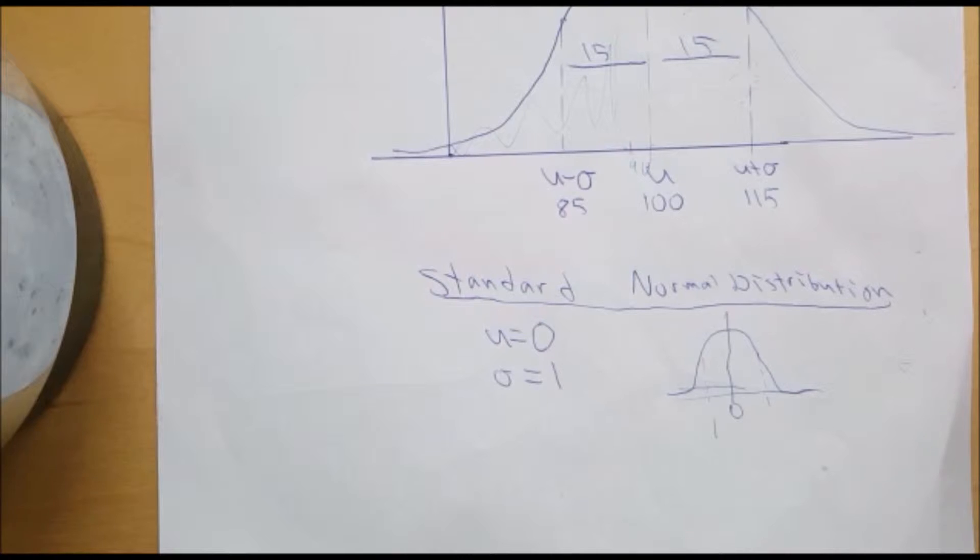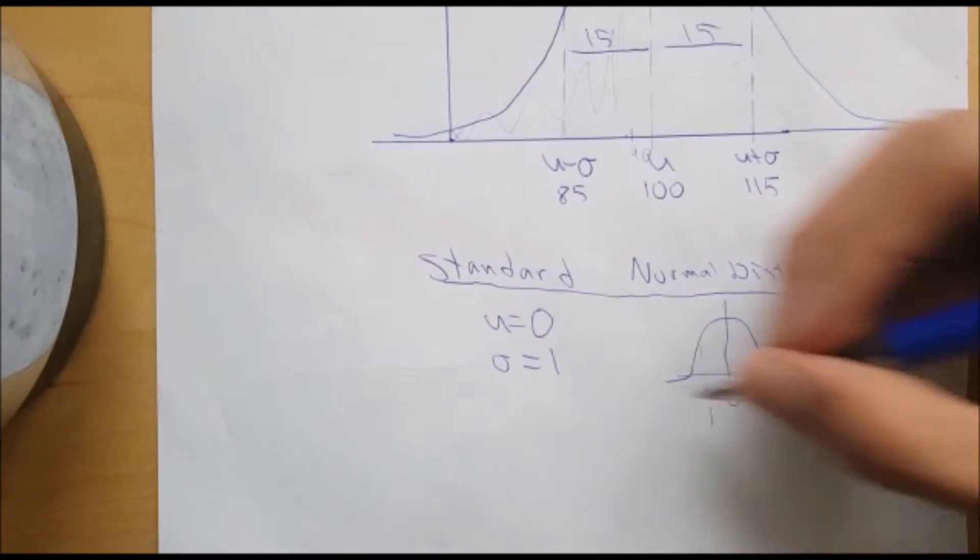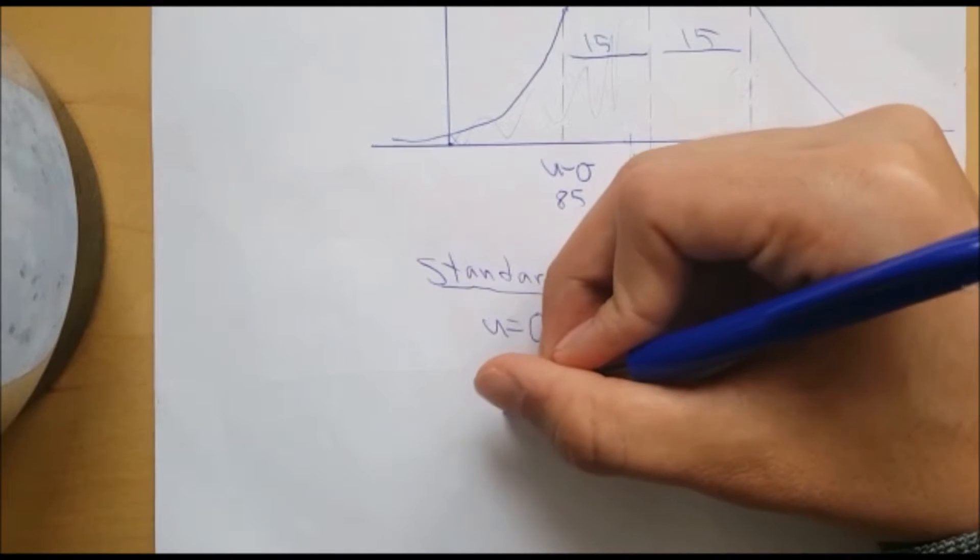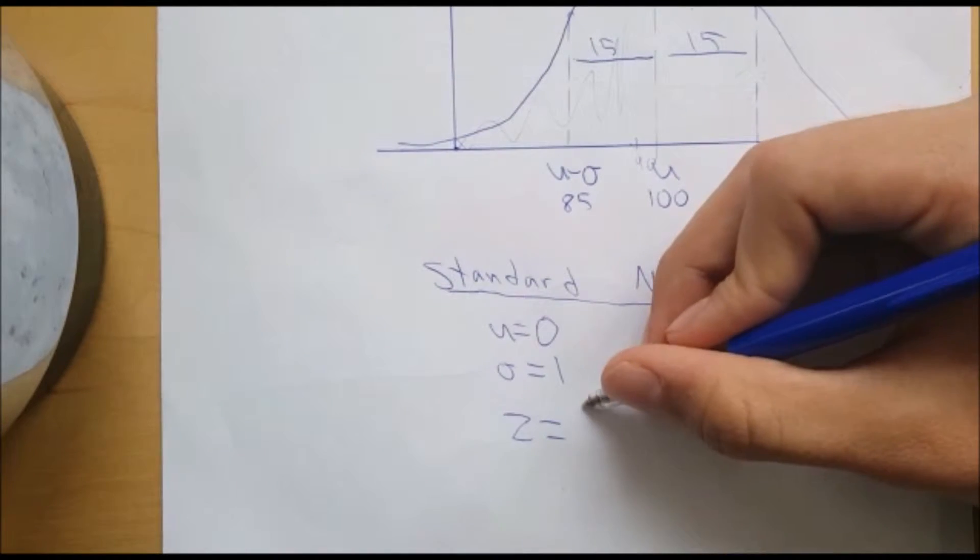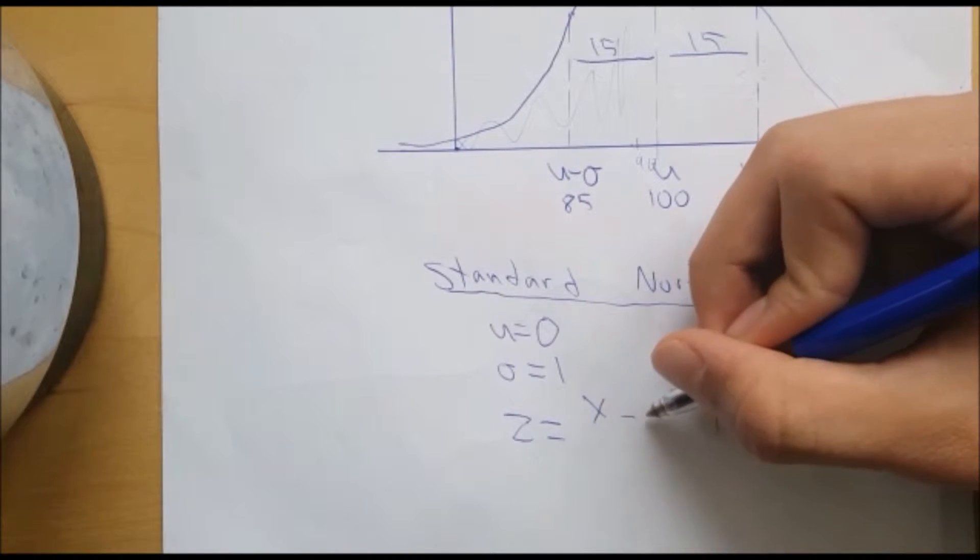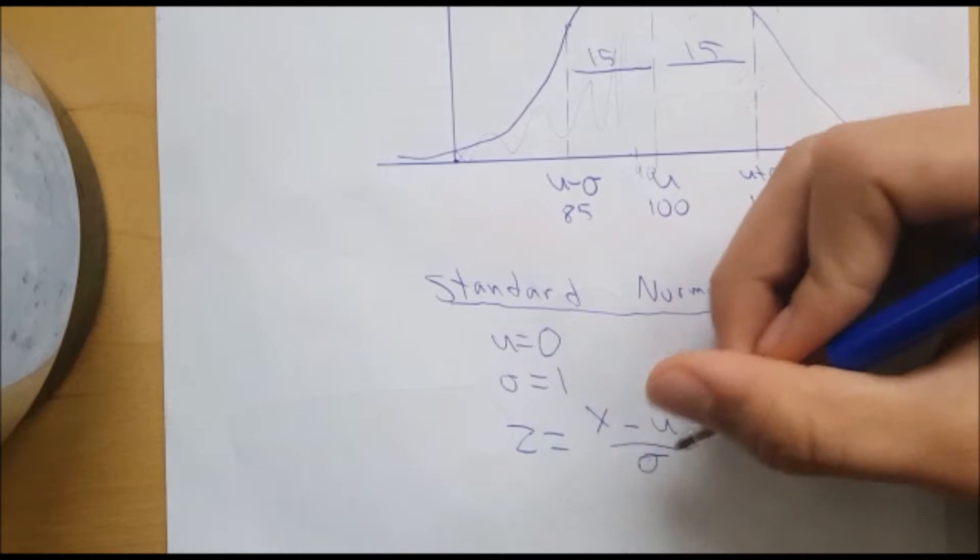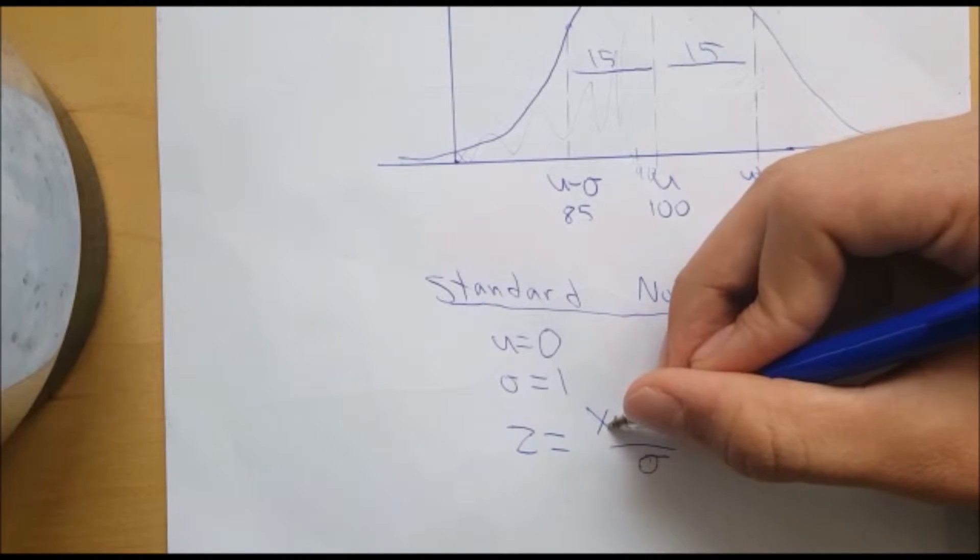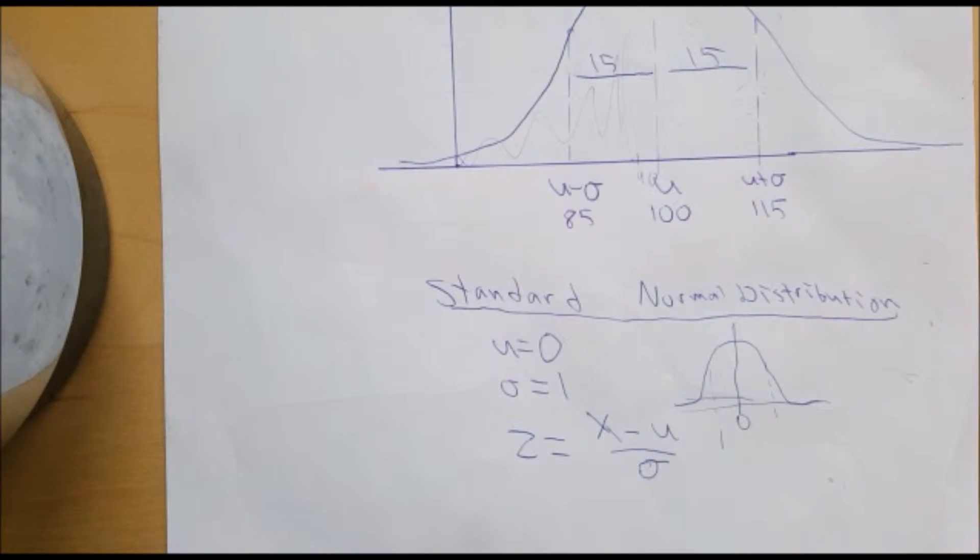Just ignore this picture right here. What's special about it is that the X value is equal to this thing. That's mean, that's standard deviation. It's equal to the X value of a normal distribution curve with this mean and this standard deviation.